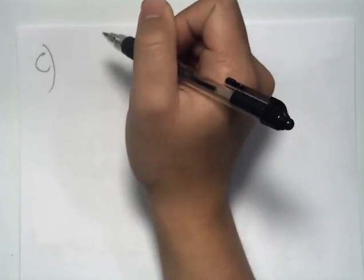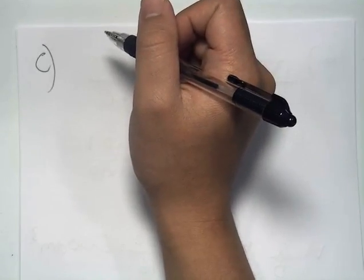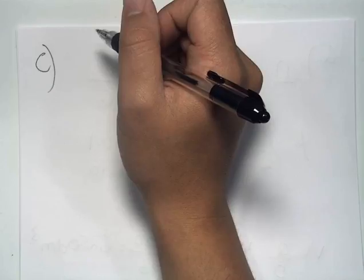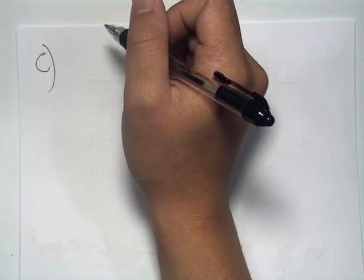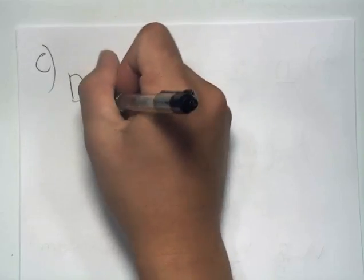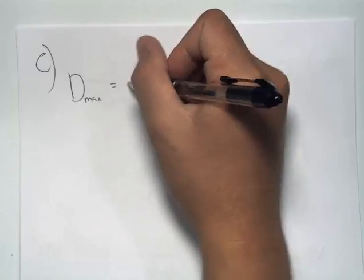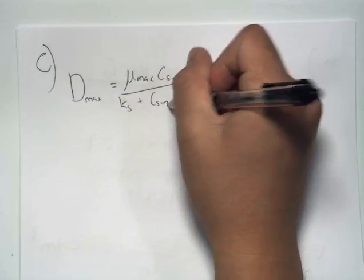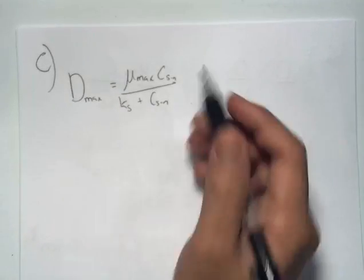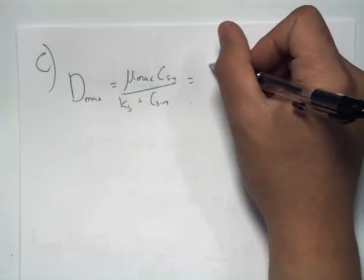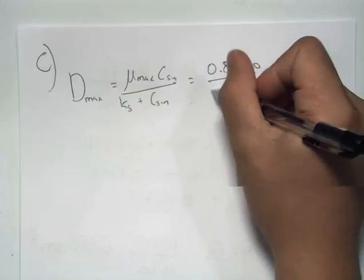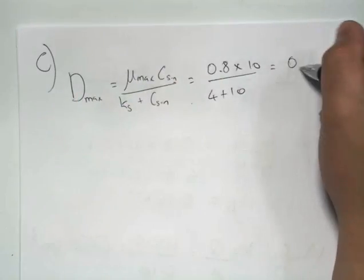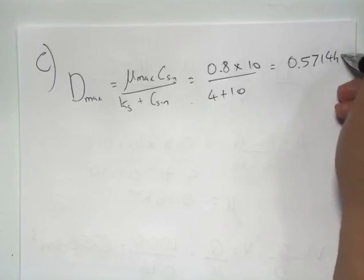Part C of the question is to determine the volumetric flow rate at which washout will occur, and the flow rate at which the cell production rate will be at a maximum. We'll first start by calculating the dilution rate at which washout occurs. Using the values given in the question, we find that the maximum dilution rate possible for this process is 0.5714 hours to the minus 1.